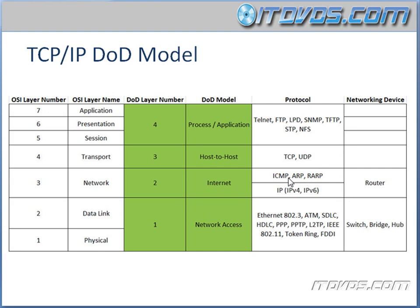We'll talk more about ICMP in a little bit. Layers 2 and 1 are condensed into the Network Access layer in the DOD model. This is where we have our data link layer protocols like Ethernet, ATM, SDLC, HDLC, PPP, PPTP, L2TP, IEEE 802.11, Token Ring, and FDDI.